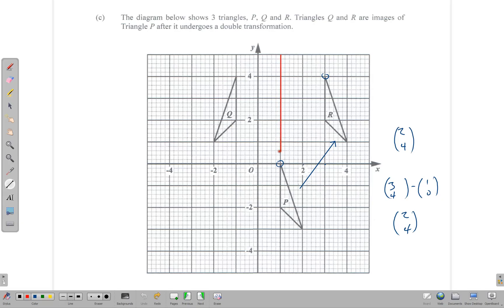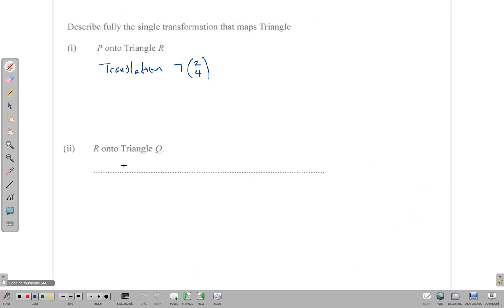Of course when it's a reflection, the mirror is exactly between the object and the image. You can see that the mirror is actually right here, so that the object and the image are equal distances apart from it. From that we know that the transformation is a reflection, and this line here, x equals 1, is the mirror. So we can go ahead and write that the transformation is a reflection in the line x equals 1.